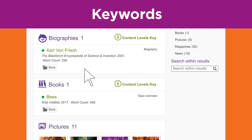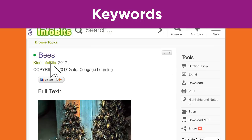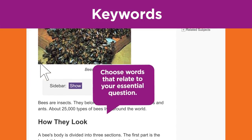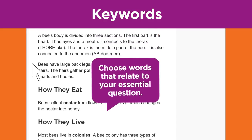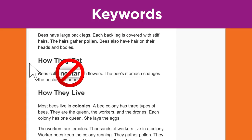Let's explore one of the articles that we found. As you read an article, often you discover new keywords to add to your list. Remember to choose words that relate to your essential question. For example, in this article, nectar stands out as an important word to understand for your knowledge of bees. However, it does not support the essential question — how do bees work as a community? — so you wouldn't write it down.